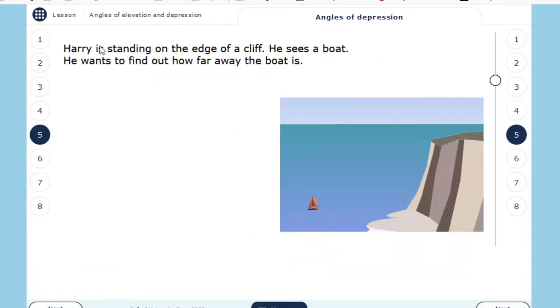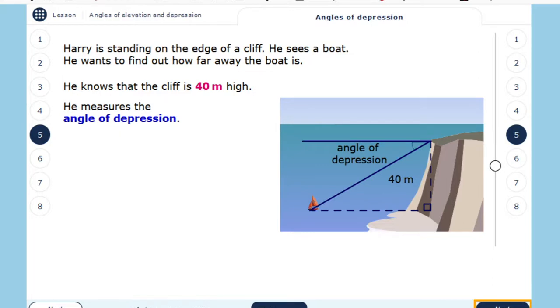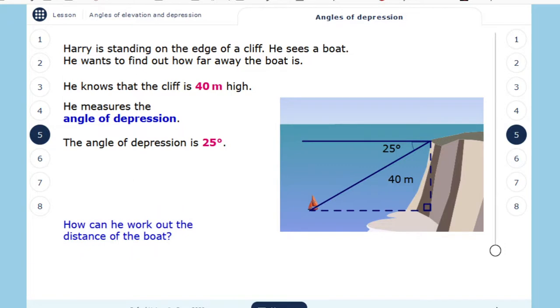Let's see that. Harry is standing on the edge of a cliff. He sees a boat. He wants to find out how far away the boat is. He knows that the cliff is 40 meters high. He measures the angle of depression. Since the object is lower than the horizon, it's called angle of depression. The angle of depression is 25 degrees. How can he work out the distance from the boat?